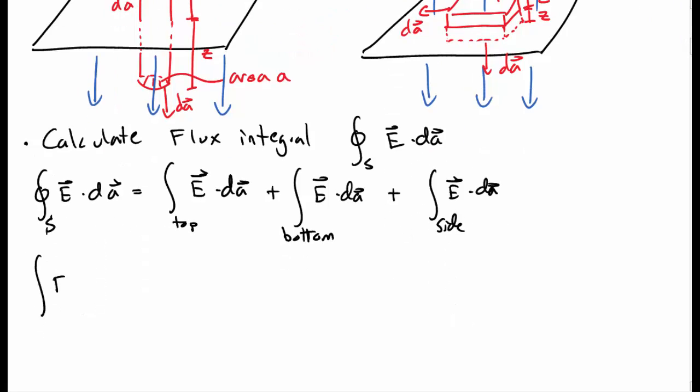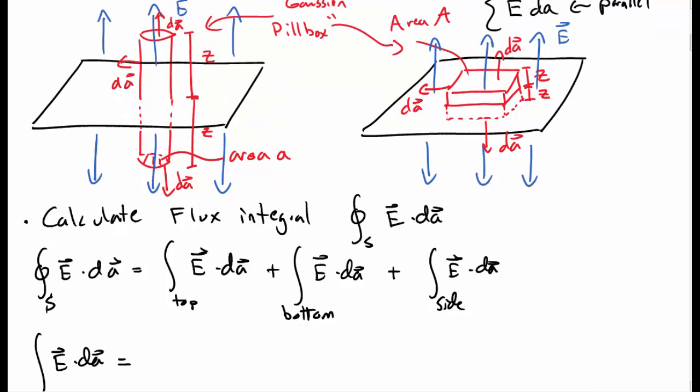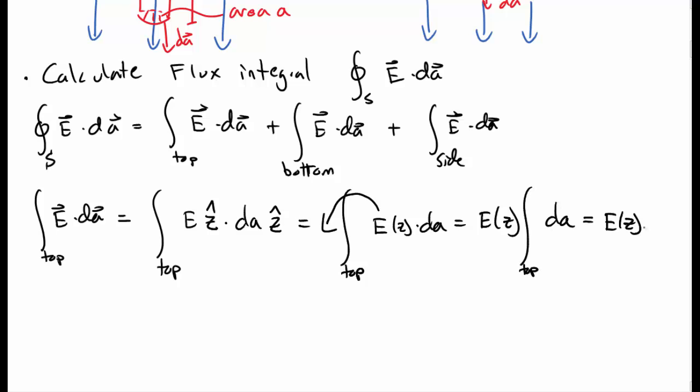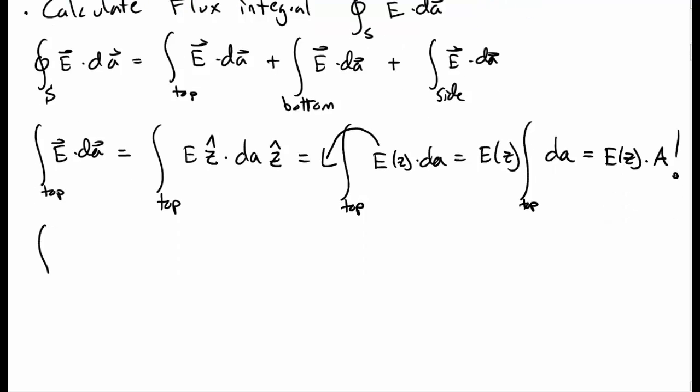So let's do the surface integral of E dot dA over the top of the Gaussian pillbox. So whichever one you look at, you notice that E and dA are pointing in the same direction. And so you can write this as E z-hat times dA in the z-hat direction. Z-hat dot z-hat is of course just one, and so you get E times dA. The electric field only depends on z, doesn't depend on anything involving the x and y directions, which is where the area depends. So you can pull it out, and so you just have E times A for the surface integral of the top.